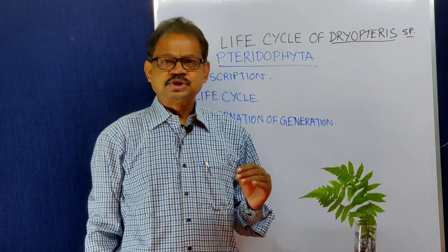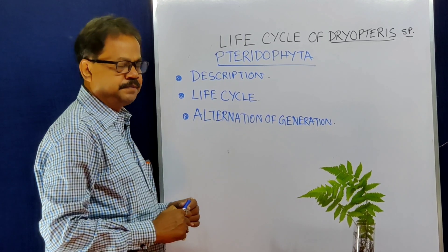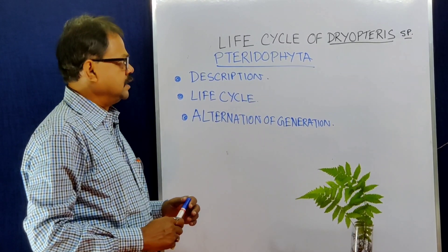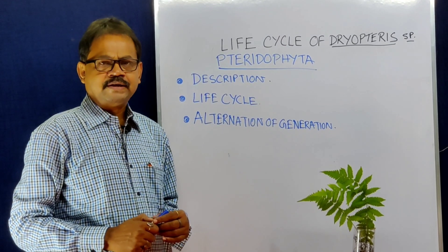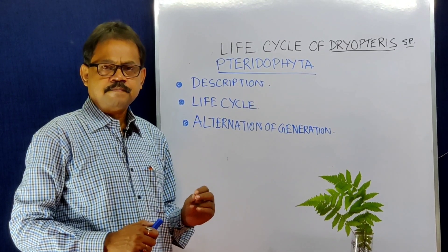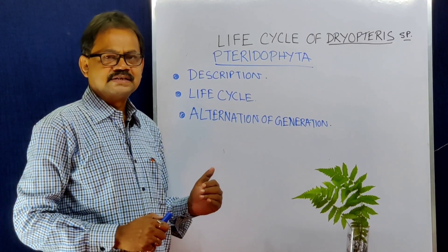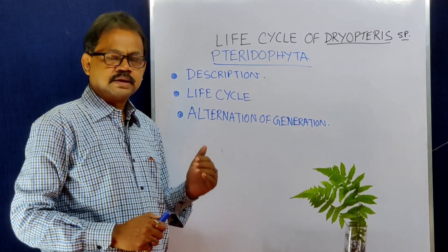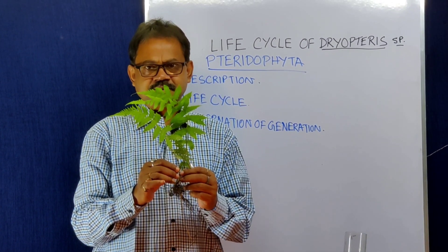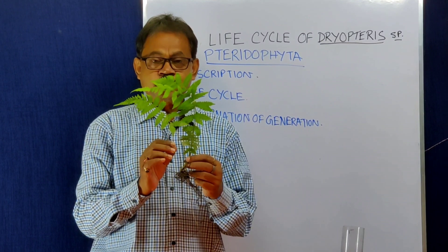While discussing the structure of Dryopteris, we will come across a description of its life cycle and alternation of generation — that is very important for Dryopteris. Dryopteris is a member of Pterophyta, which is a division of sub-kingdom Cryptogamia of kingdom Plantae. Dryopteris is cryptogamy because it does not have any flower.